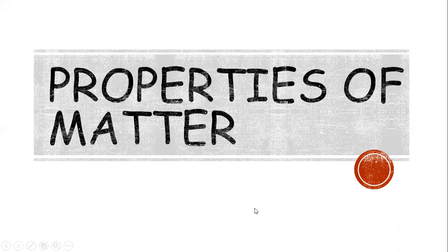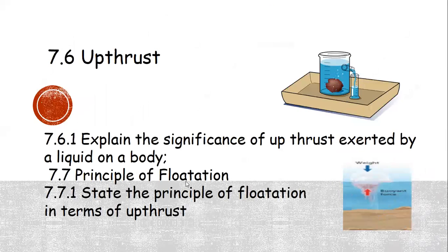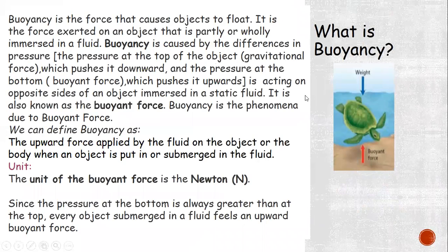Assalamu alaikum students. Today in the unit 'Properties of Matter' we are going to discuss upthrust. We will explain the significance of upthrust exerted by a liquid on a body and state the principle of flotation in terms of upthrust. First, what is buoyancy? Buoyancy is the force that causes objects to float — it is the force exerted on an object when it is partially or wholly immersed in a fluid. Buoyancy is caused by the difference in pressure, and we know that pressure depends on depth.